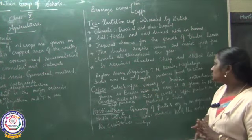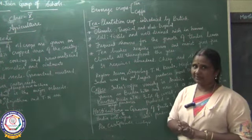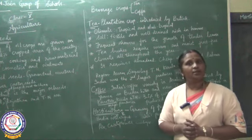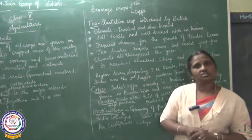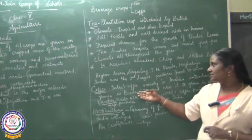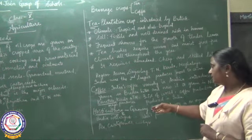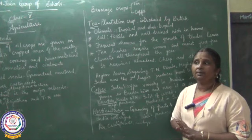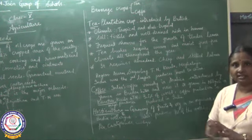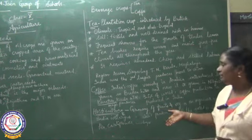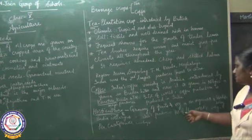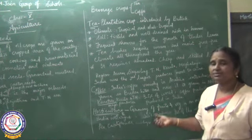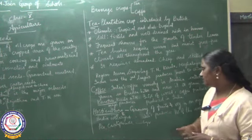India is the second largest producer of tea next to China. Now we come to horticulture — the production of vegetables and fruits. India is the second largest producer, and almost 13 percent of the world's vegetables are grown in India. Some prominent vegetables in India are peas, cauliflower, and cabbage.